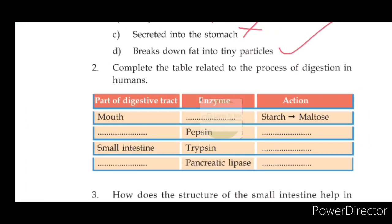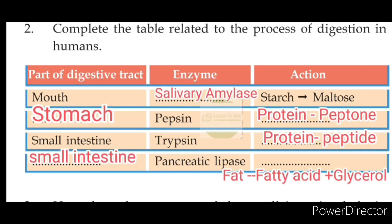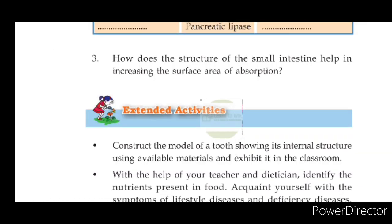Now let's complete the table related to the process of digestion in humans. In the mouth, the enzyme is salivary amylase, and its action converts starch to maltose. In the stomach, the enzyme is pepsin, and its action converts protein to peptone. In the small intestine, enzymes convert protein to peptides, and pancreatic enzymes break fat into fatty acids and glycerol.